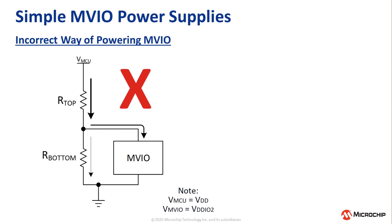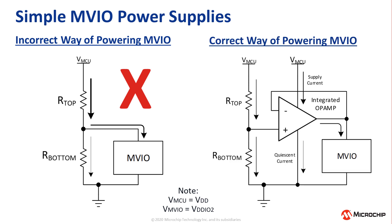One of the most common use cases for op-amps is to act as a high impedance voltage follower. In this configuration, the op-amp buffers the voltage set by the two resistors and isolates it from the load. This allows the power supply to run at a stable voltage as the load changes.